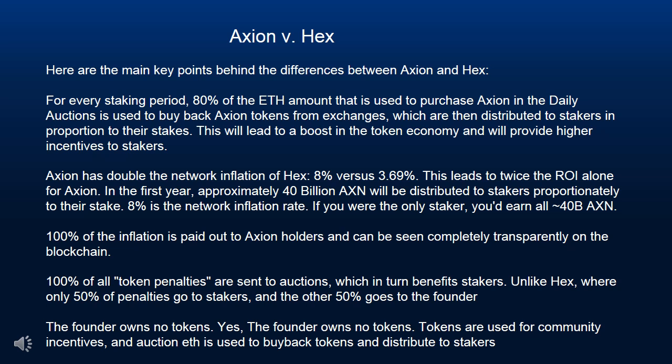Here are the main key points behind the differences between Axion and HEX. For every staking period, 80% of the ETH amount that is used to purchase Axion in the daily auctions is used to buy back Axion tokens from exchanges, which are then distributed to stakers in proportion to their stakes.